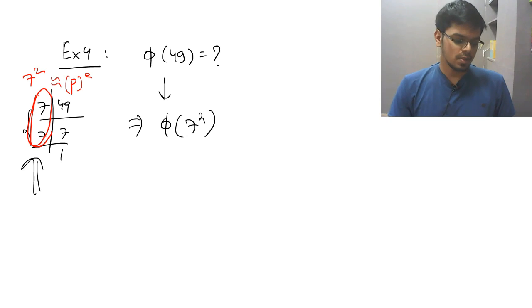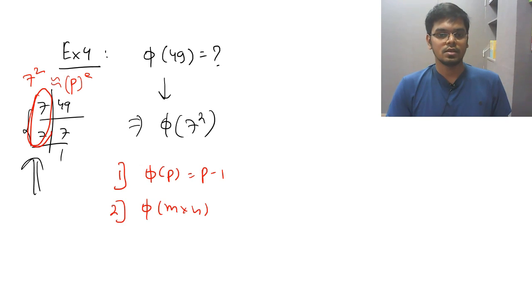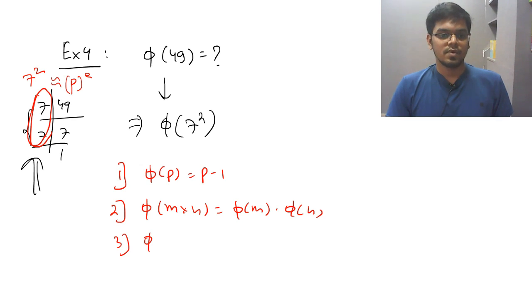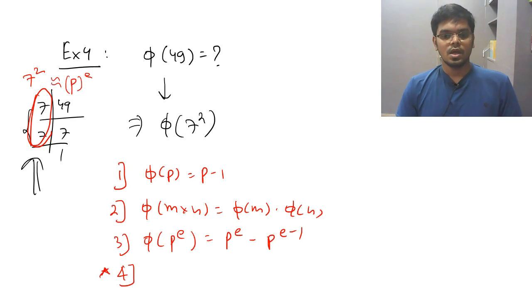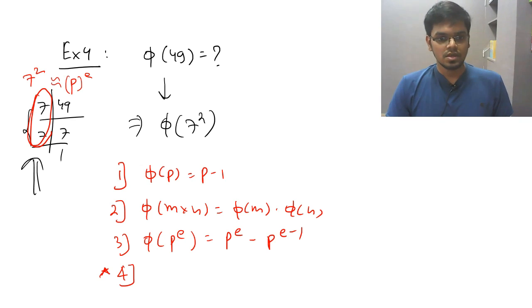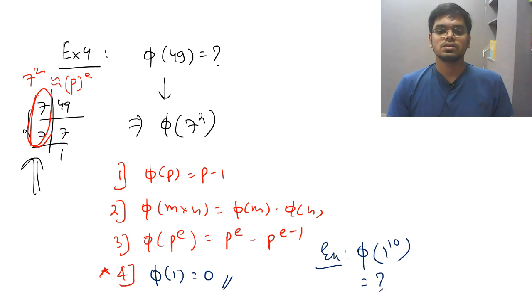There are actually 4 formulas. Formula 1: phi of p equals p minus 1. Formula 2: phi of m times n equals phi of m times phi of n. Formula 3: phi of p to the power e equals p to the power e minus p to the power e minus 1. Formula 4 — unique and not used in these examples: phi of 1 equals 0. For example, phi of 1 raised to 10 equals 0.